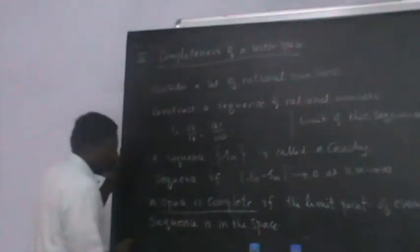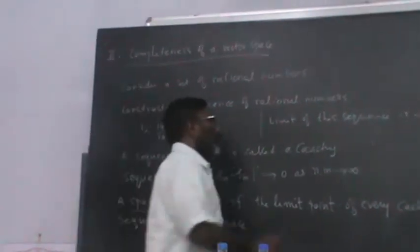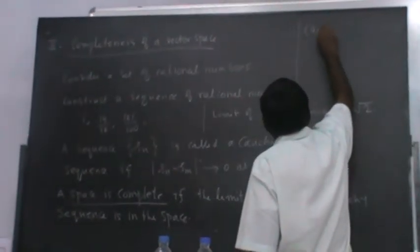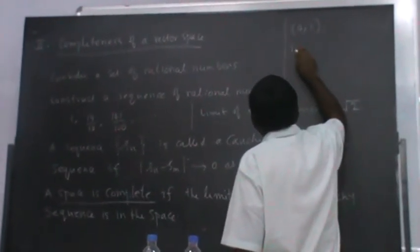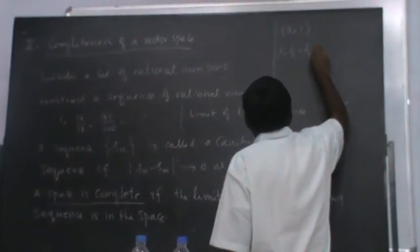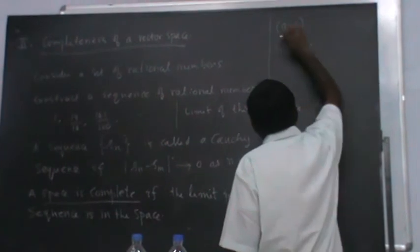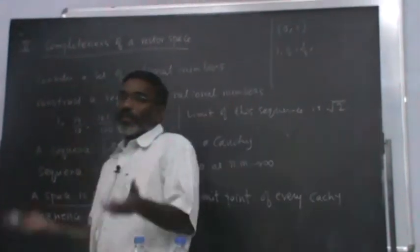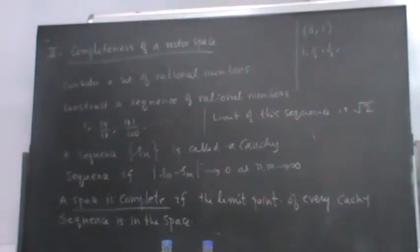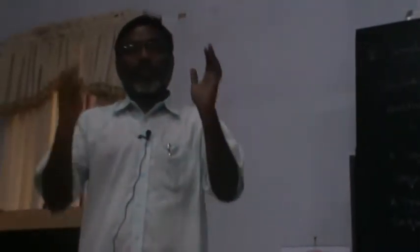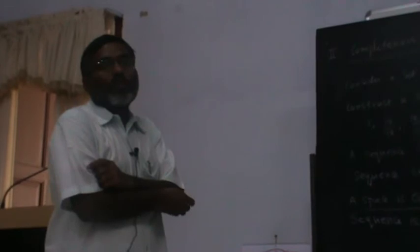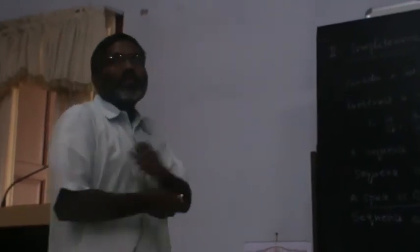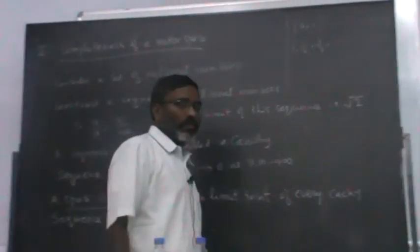Similarly, if you want another example, consider the open interval (0, 1) — that means 0 and 1 are not included. Construct a sequence like 1, 1/2, 1/4, etc. The limit of this sequence is 0, but 0 is not in this interval. So this open interval (0, 1) is not complete because I can construct a Cauchy sequence whose limit point is not in the set. But if I take the closed interval [0, 1], then this sequence will have a limit point within that interval. Constructing any such Cauchy sequences that have a limit point inside the space — we say that the space is complete.